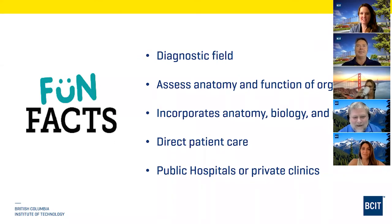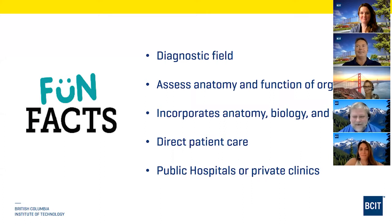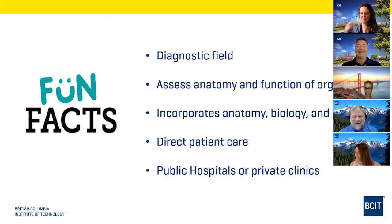The correct answer to the poll was the lungs — which of the following body parts cannot be assessed with sonography? We can assess ankle joints, looking for fluid within the joint, tendons and muscles. Any soft tissue structure can be examined with ultrasound, including the heart and kidneys. Lungs was the correct choice. Although, with COVID, interestingly, we can see damage in the lungs — fluid and consolidation — but we cannot see normal lungs.